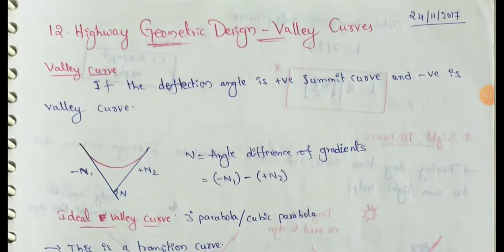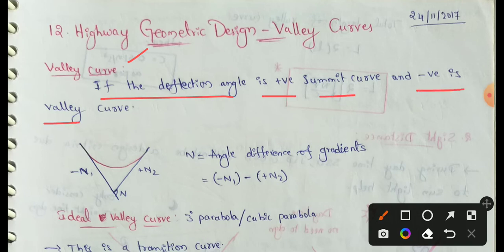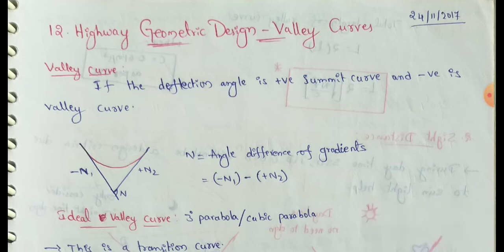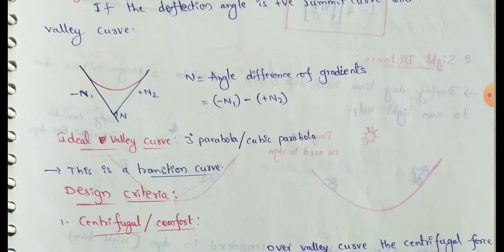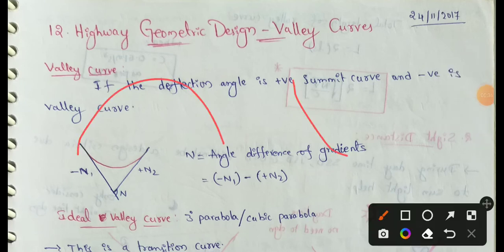Next topic: Highway Geometric Design in Valley Curves. We have two types of vertical curves: Summit Curve and Valley Curve. We have already discussed Summit Curve in the previous video. In this video, we will discuss Valley Curves. If the deflection angle is positive, that is a Summit Curve; if negative, it is a Valley Curve.